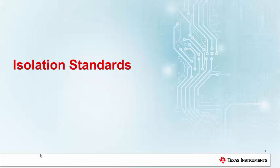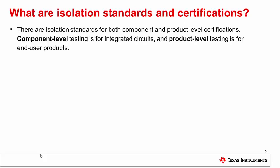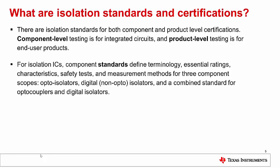Isolation standards. There are isolation standards for both component and product level certifications. Component level testing is for integrated circuits, and product level testing is for end user products. For isolation ICs, component standards are used to define terminology, essential ratings, characteristics, safety tests, and measurement methods for three component scopes: opto isolators, digital or non-opto isolators, and a combined standard for optocouplers and digital isolators.